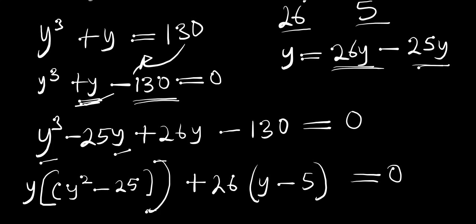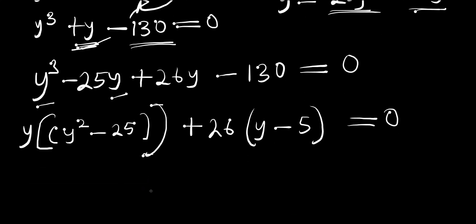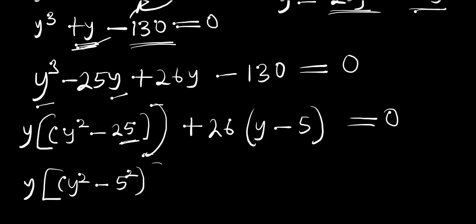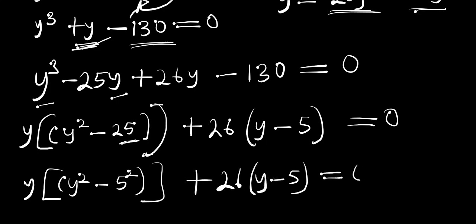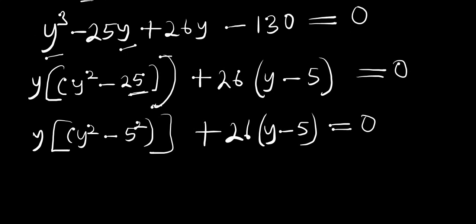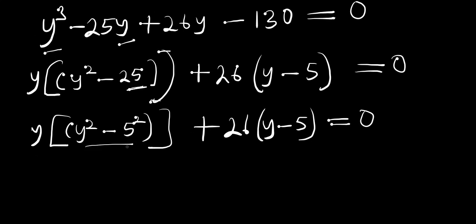Now 25y² is a perfect square, so we can write y(y² - 5²) plus 26(y - 5) = 0. This actually becomes a difference of two squares. The identity is: a² - b² equals (a + b)(a - b). We are going to apply this identity right here.